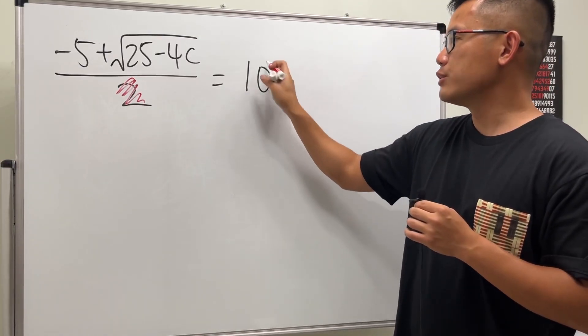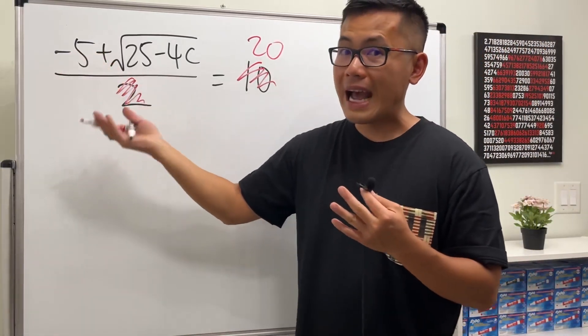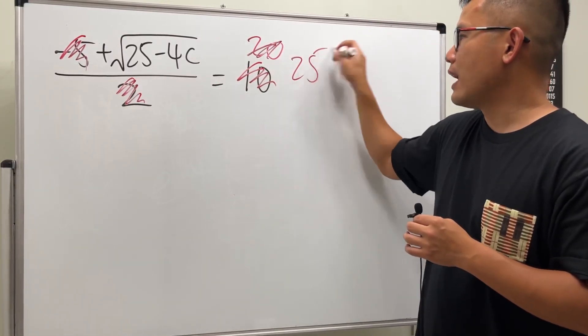10 times 2 is equal to 20, so get rid of it and then put 20 right here. Next, we will have to get rid of this negative 5 to add 5 on both sides, right? So just get rid of it, and then 20 plus 5 is 25.